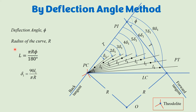The last peg interval is not necessarily equal to l1, because the curve length formula involves π (≈3.14) and will give a decimal value. To avoid measuring decimal distances in the field with a tape, we typically choose a whole number peg interval such as 5 m or 10 m. When using a whole number, the last sub-interval l2 will be a remainder and will differ from the standard peg interval.